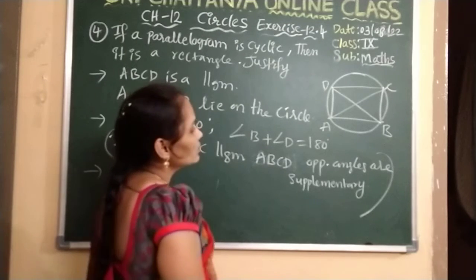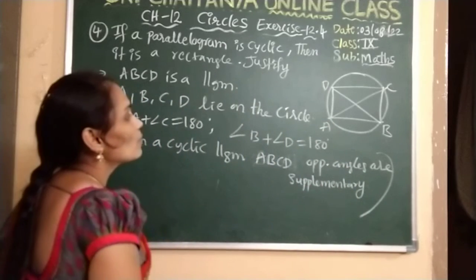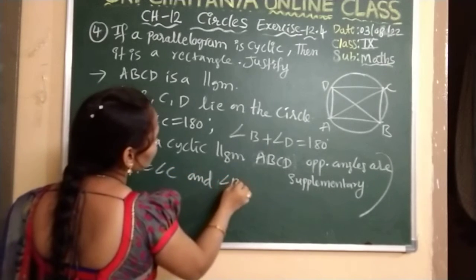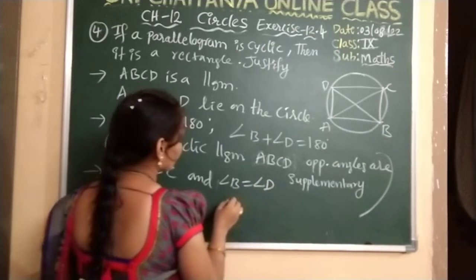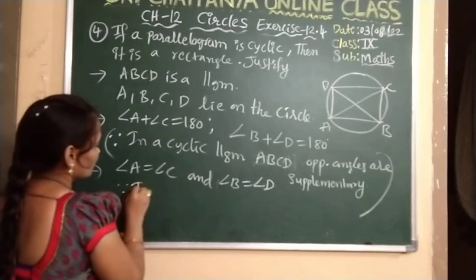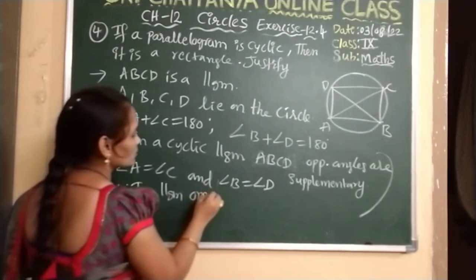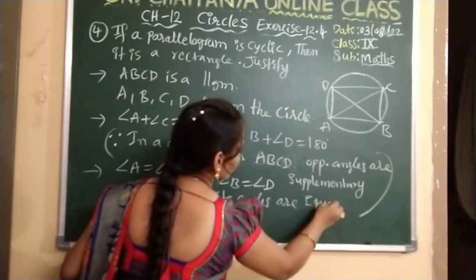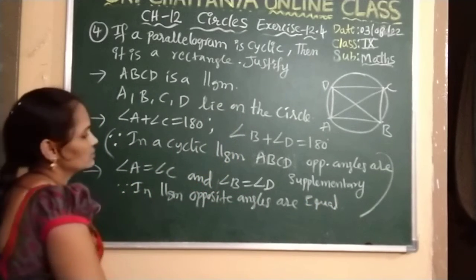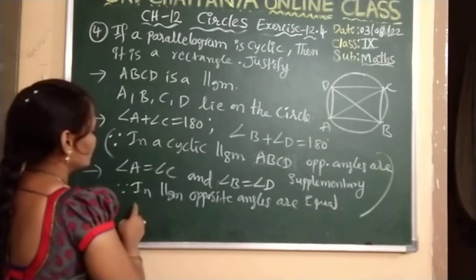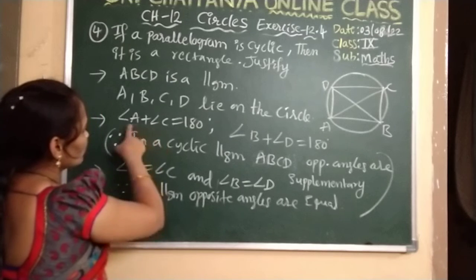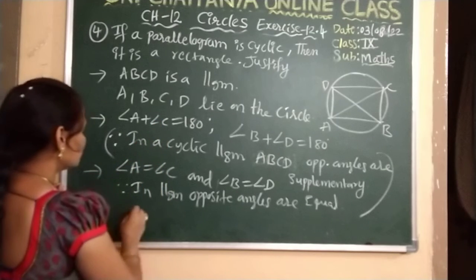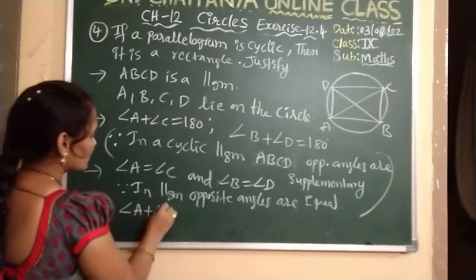Next, in a parallelogram, opposite angles are equal. So angle A is equal to angle C, and angle B is equal to angle D. Now, since angle A equals angle C, instead of angle C, we substitute angle A into the first equation. So angle A plus angle A equals 180.